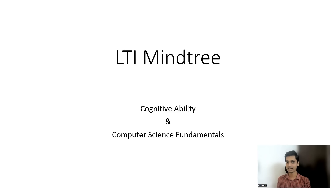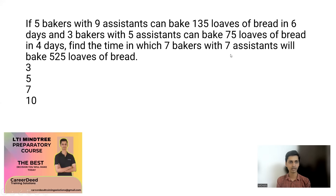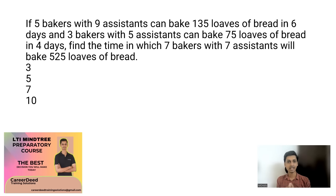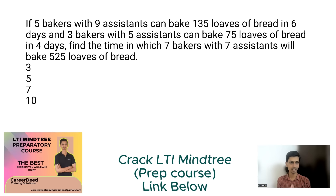Now without wasting any time, let's enter the first question. Question number one: if five bakers with nine assistants can bake 135 loaves of bread in six days, and three bakers with five assistants can bake 75 loaves of bread in four days, find the time in which seven bakers with seven assistants will bake 525 loaves of bread. This question is related to time and work.